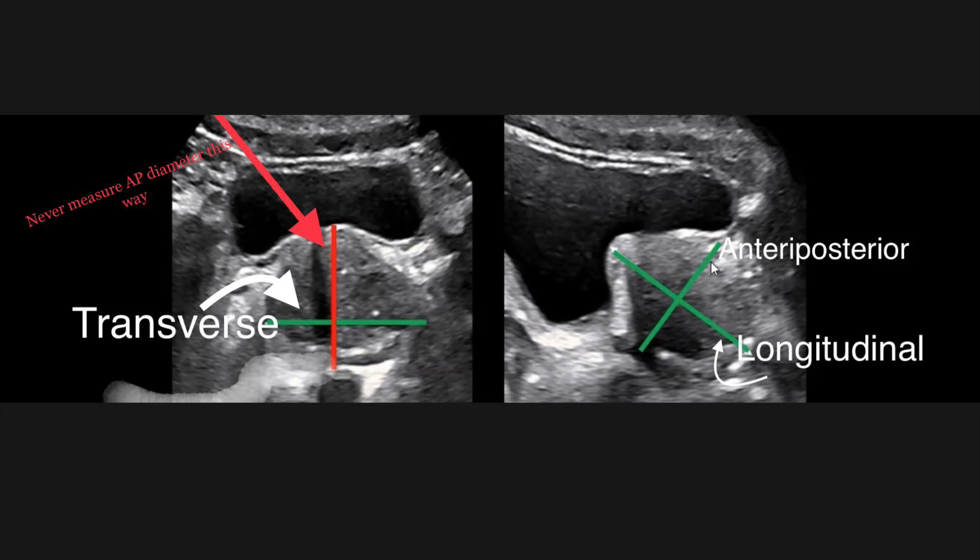Now measure the transverse diameter — that is the width of the prostate — on the axial image. Then on the longitudinal image, measure the remaining diameters: the anteroposterior diameter and the longitudinal diameter, that is the height and length of the prostate.